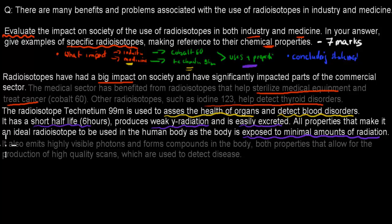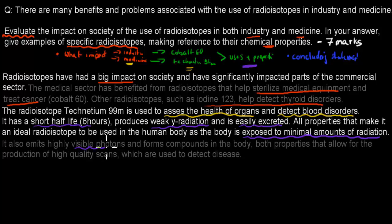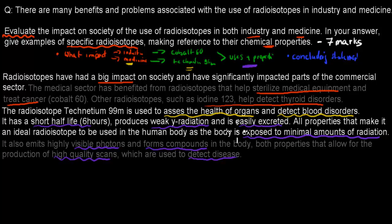Technetium-99m also emits highly visible photons and forms compounds in the body — both properties that allow for the production of high-quality scans, which are used to detect diseases. So it emits visible photons and forms compounds, and these properties relate to function because they allow us to produce high-quality scans used to detect disease. That's connecting the properties to the uses of one specific radioisotope.